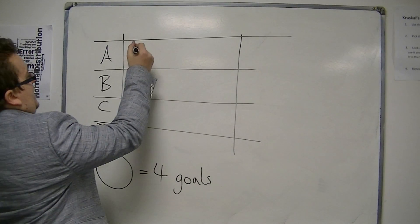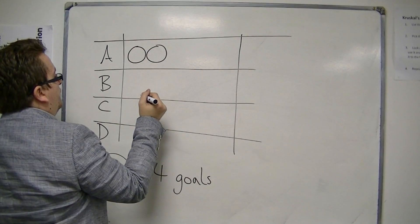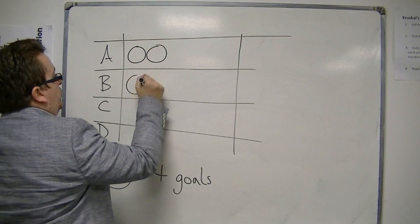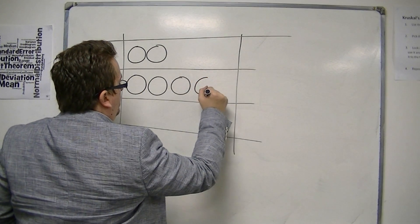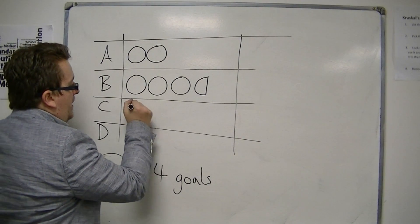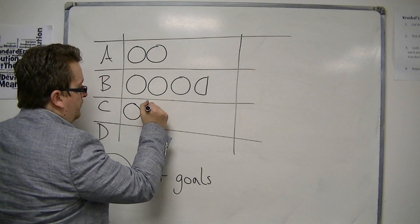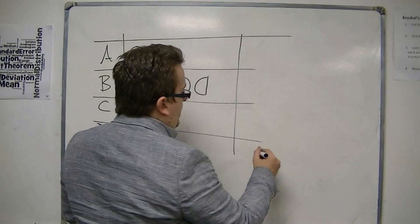So let's say A scored this many goals. And B scored this many goals. And C scored this many goals. And D scored this many goals.